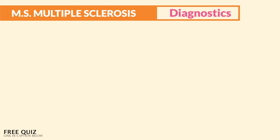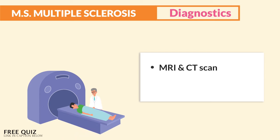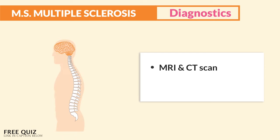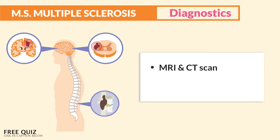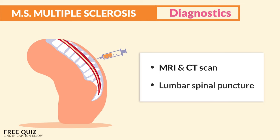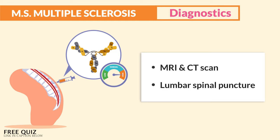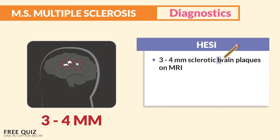In terms of diagnostics, we do an MRI or CT scan to see plaque on the brain and spinal cord. Think multiple scars with plaque in multiple sclerosis — we see a lot of scars. Three to four millimeters of sclerotic brain plaque on an MRI is indicative of an M.S. diagnosis.